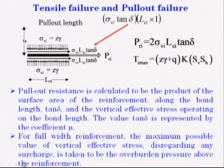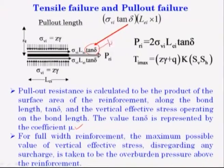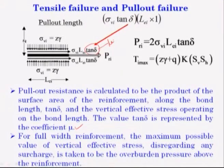Pullout resistance is calculated as the product of the surface area of the reinforcement along the bond length, tan(delta), and the vertical effective stress operating on the bond length. The value of tan(delta) is represented by coefficient mu. It is the product of sigma_VI · tan(delta), where L_I is your length, and over this surface area it acts for the full width of the reinforcement.